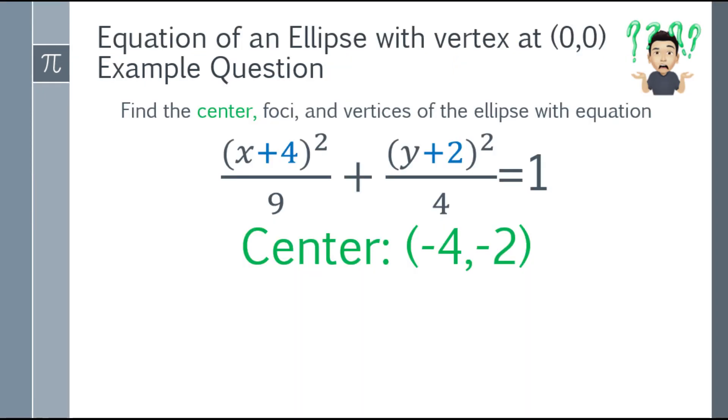So for the center, we can see immediately that will be negative 4 and negative 2. In the equation was x plus 4 and y plus 2, you just have to negate it. That will be negative 4 and negative 2. So we already have the center.